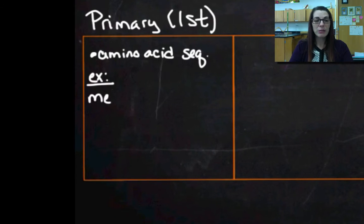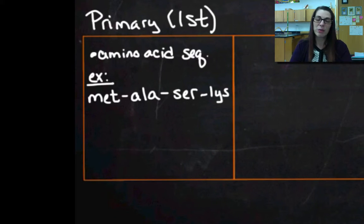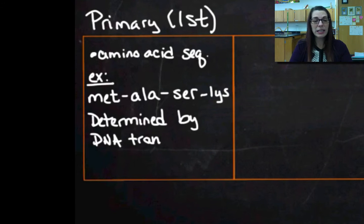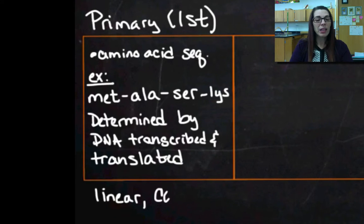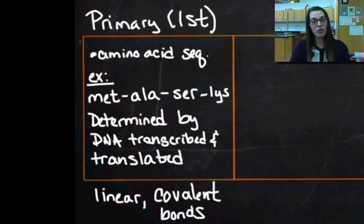For example, my sequence could be methionine, alanine, serine, lysine, and that's it. I mean, it would be a lot longer because proteins are a lot bigger than four amino acids. But there's my example sequence, and that is determined by the DNA. Your DNA is transcribed and then translated, and that determines the order of the amino acids in a protein. Those amino acids are going to line up in a linear strand, and they're held together by covalent bonds. That peptide bond between the amino group of one amino acid and the carboxyl group of the other amino acid, those are actually covalent bonds. That's my primary structure.